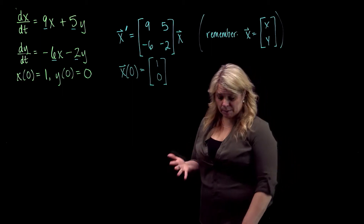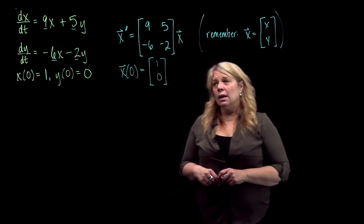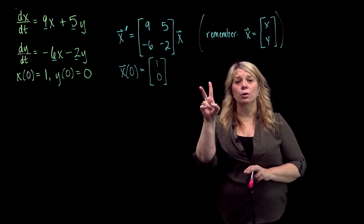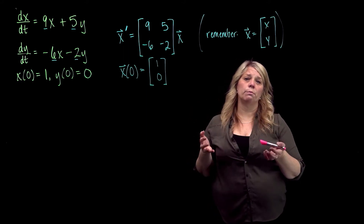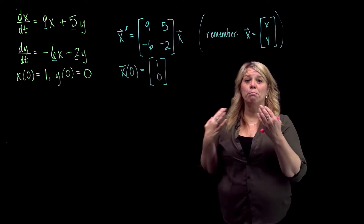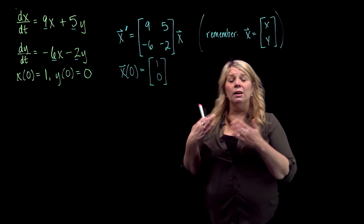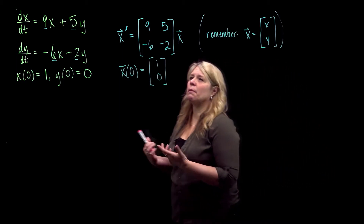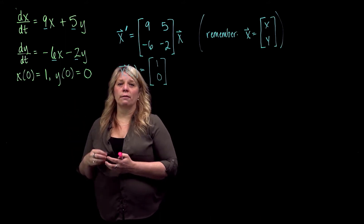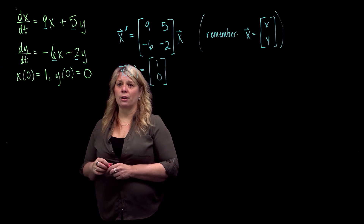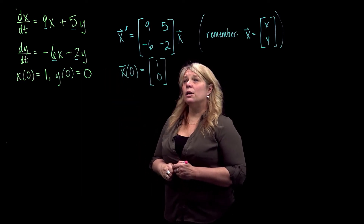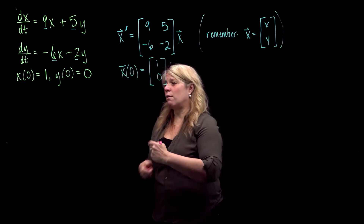I'm going to use eigenvalues and eigenvectors to solve this. Remember, it's a two-dimensional system, so I need two linearly independent solutions to build the general solution. I'm after two linearly independent solutions to form a basis for the solution space. The basic idea is that if you find your eigenvalues and an eigenvector forming the basis for the null space for each eigenvalue, you can build your linearly independent solutions.